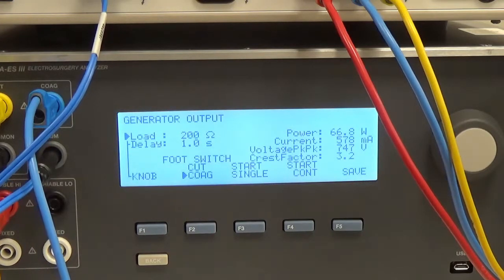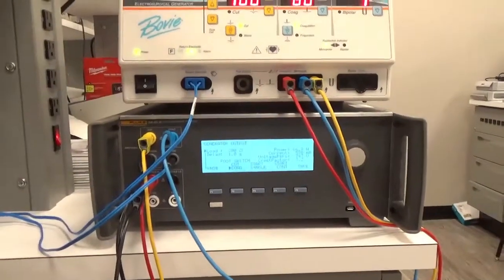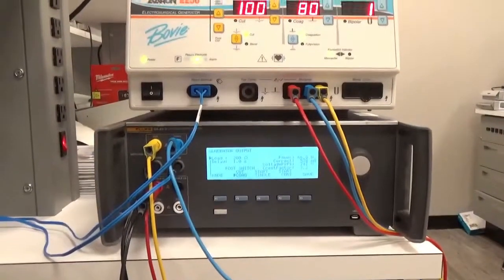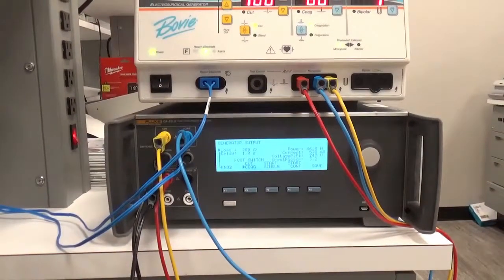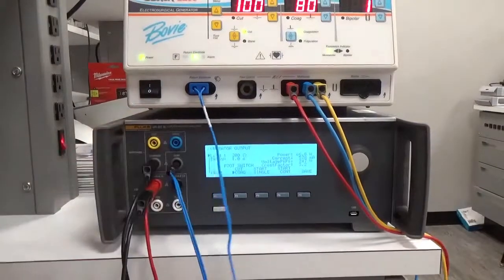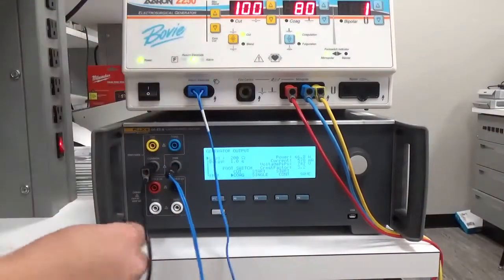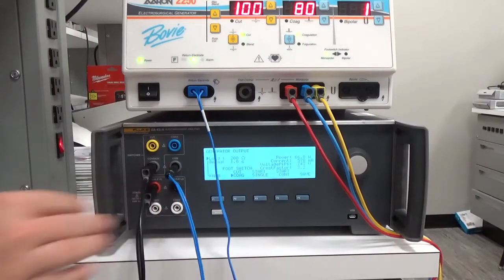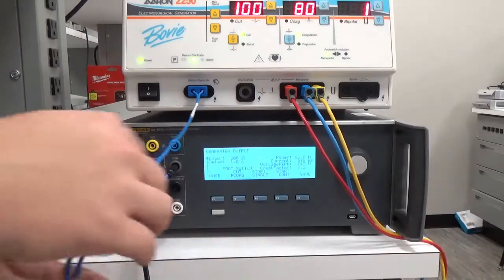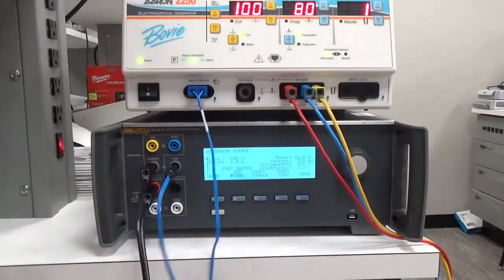So this is one way to connect the two devices together. I'm actually going to show you another way. What we need to do, we actually need to disconnect most of these. I'm going to leave the common and the variable high jumped and I'm going to leave my return electrode connected as well.